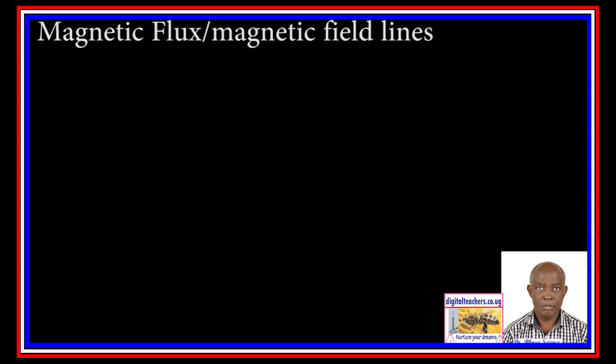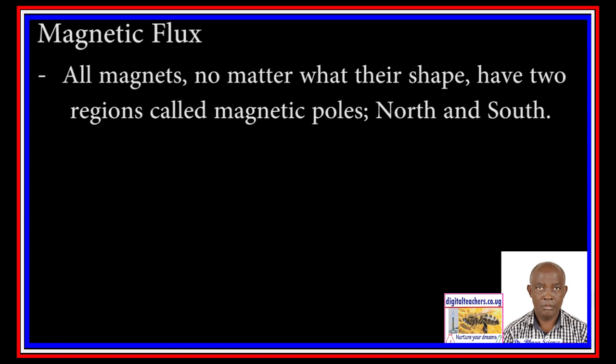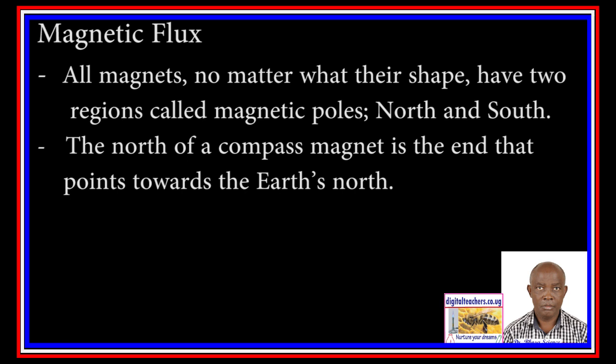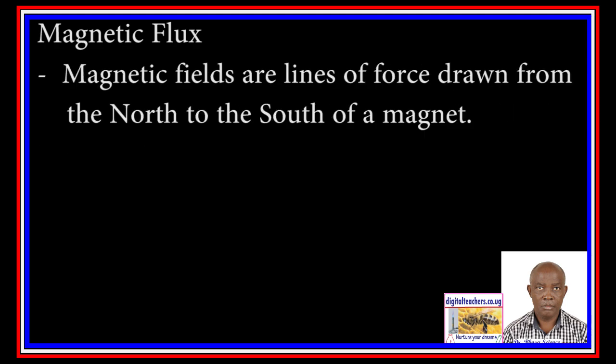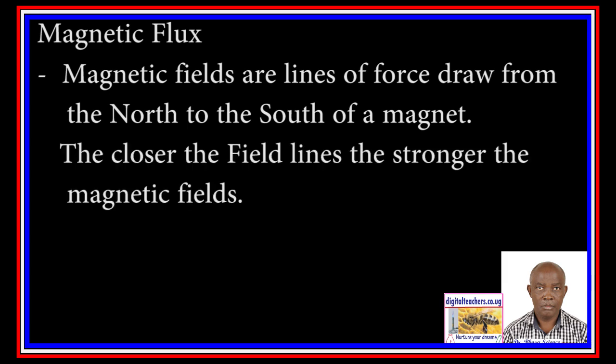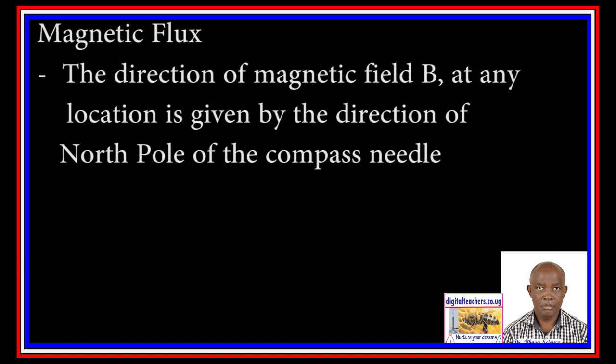Magnetic flux. All magnets, no matter what their shape, have two regions called magnetic poles: north and south. The north of a compass magnet is the end that points towards the earth's north. Unlike poles attract. Magnetic field lines are lines of force drawn from the north to south of a magnet. The closer the field lines are, the stronger the magnetic field. The direction of magnetic field B at any location is given by the direction of the north pole of a compass needle.